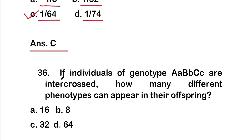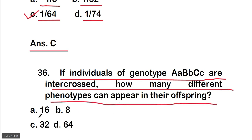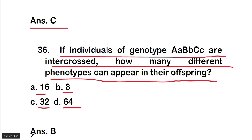Question 36: If individuals of genotype AaBbCc are intercrossed, how many different phenotypes can appear in their offspring? Options are 16, 8, 32, or 64. The right answer is option B — 8 different phenotypes.